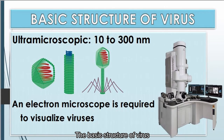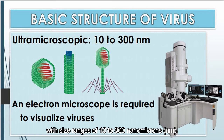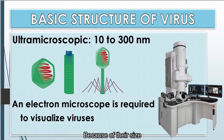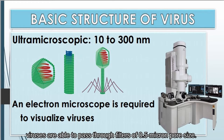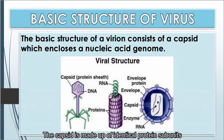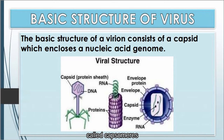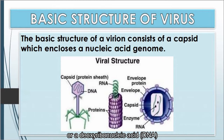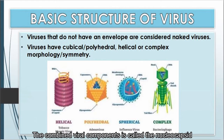The basic structure of a virus: viruses are ultramicroscopic organisms with size ranges of 10 to 300 nanomicrons. An electron microscope is required to visualize viruses. Because of their size, viruses are able to pass through filters of 0.5 micron pore size. The basic structure of a virion consists of a capsid which encloses a nucleic acid genome. The capsid is made up of identical protein subunits called capsomeres, while the genome is either ribonucleic acid (RNA) or deoxyribonucleic acid (DNA). The combined viral components are called nucleic acid.